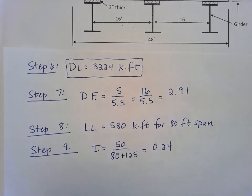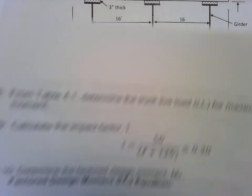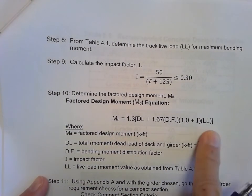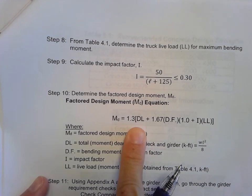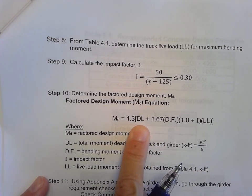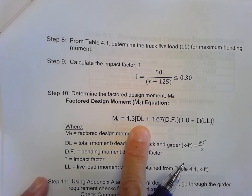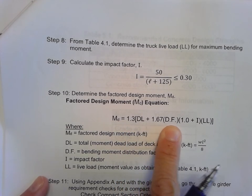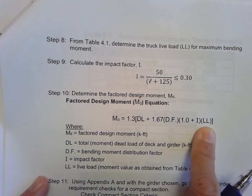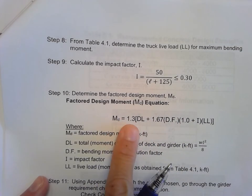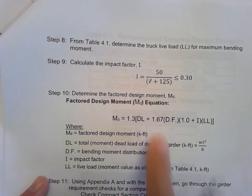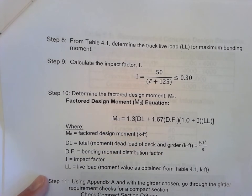Now we're all ready to put it into our equation to find our factored moment. Taking a look back to our steps here, remember our factored design moment equation. We're using our information we've gathered so far: our total dead load from step six, our distribution factor, our impact factor, and the live load. We're going to put those in using our other factor information from AASHTO to come up with a total factored design moment.